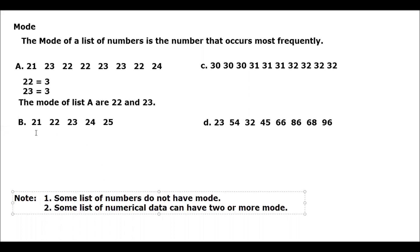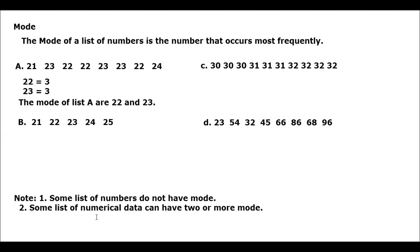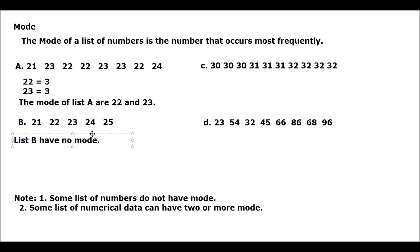For letter B, we have 21, 22, 23, 24, and 25. The mode for list B — list B has no mode, since each number occurs only once.